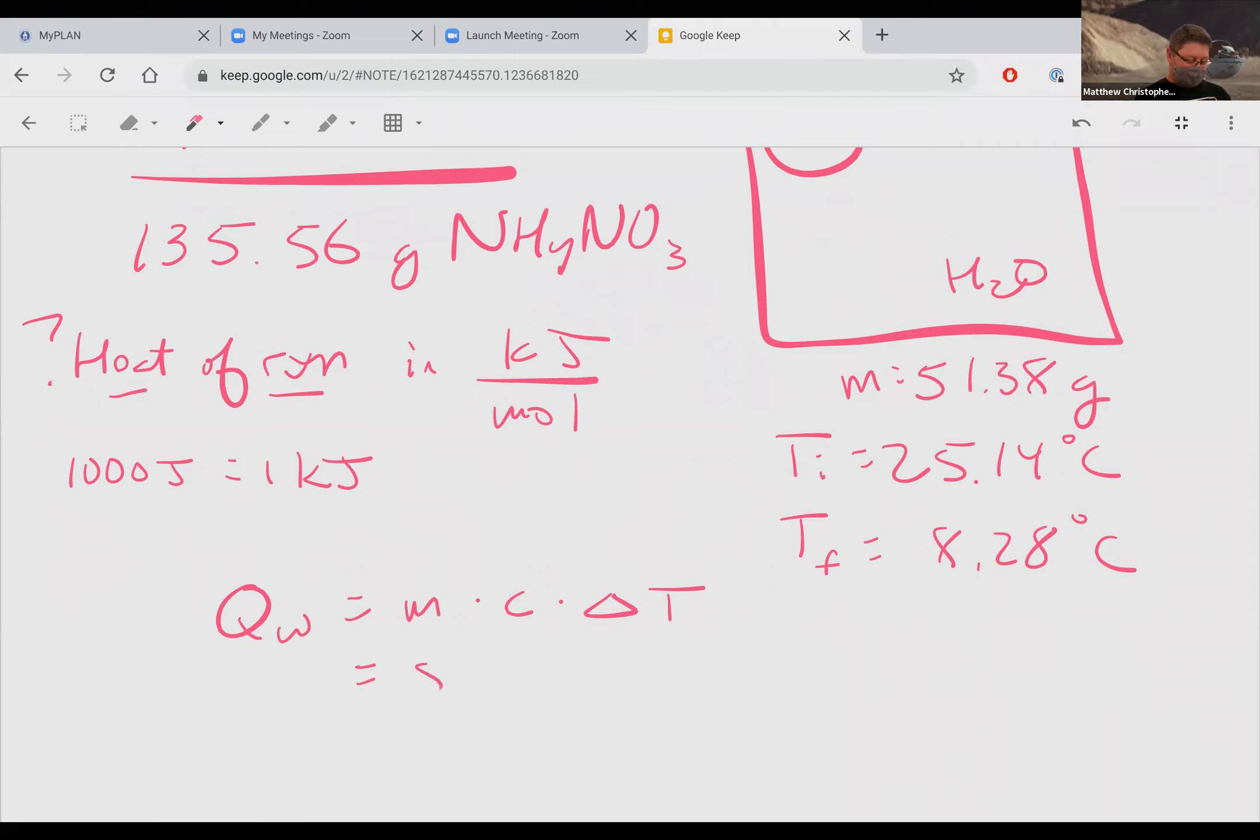The mass of the water is 51.38 grams. Specific heat of water, I'm going to use the joule value for liquid water, which is 4.184 joules per gram degree Celsius. And then the change in temperature is the final temperature, the 8.28 minus the initial, which is 25.14.